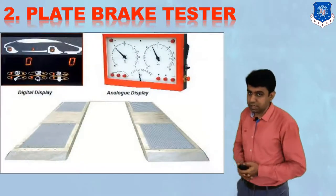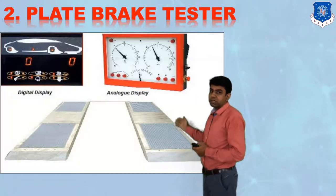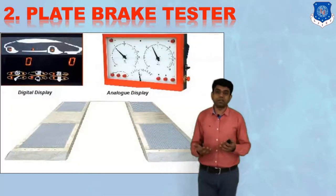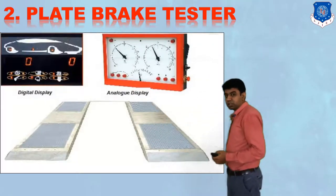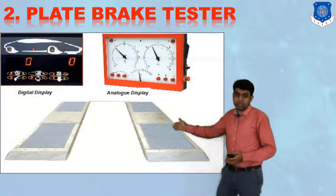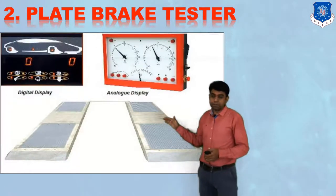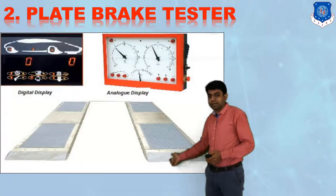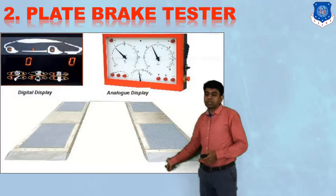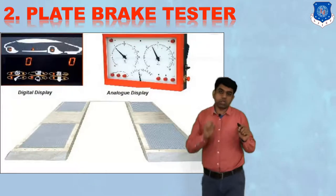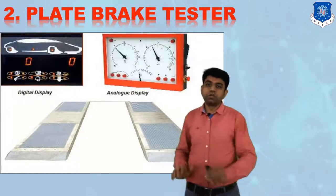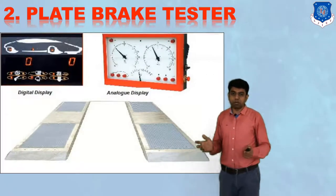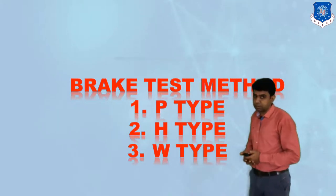The next test is the plate brake tester. In this test, plates with a force transducer are arranged. The vehicle is driven along the plate brake tester and suddenly stopped. On stopping, the plate drags forward — it slips forward — and that amount of slippage and the force received are measured. From that, we calibrate how much force has been induced. These are the two normal methods to evaluate brake performance.